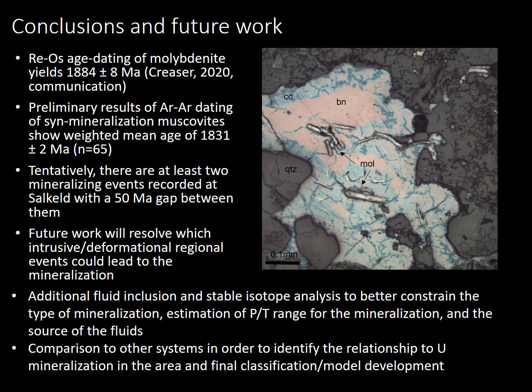Uranium-osmium age dating of molybdenite yields 1884 ± 8 million years. However, preliminary results of argon-argon dating of syn-mineralization muscovites show a weighted mean age of 1831 ± 2 million years. Tentatively, there are at least two mineralizing events recorded at Salkil, with a 50-million-year gap between them.